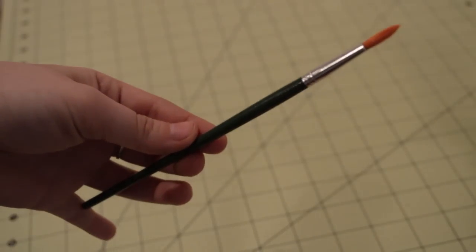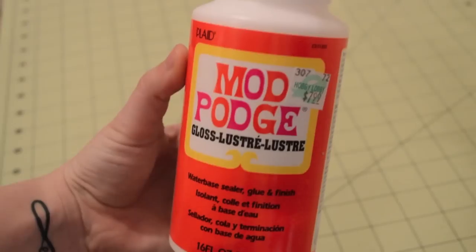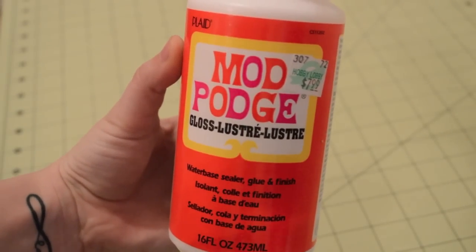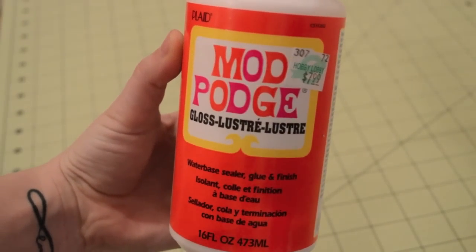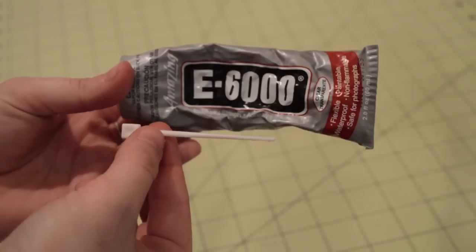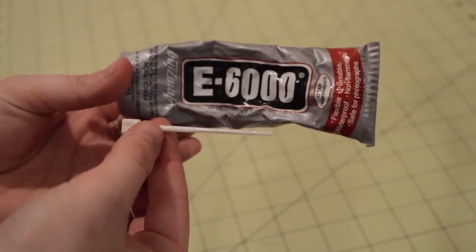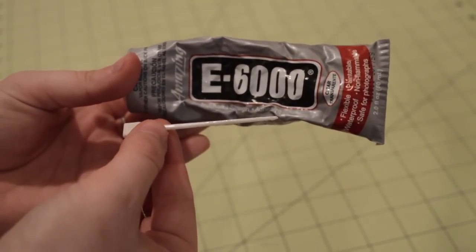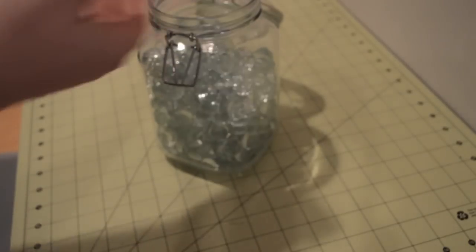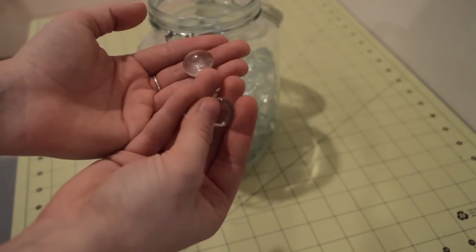Also you'll be needing a paint brush, some Mod Podge, I got this 16 ounce at Hobby Lobby for $7.99, some E6000 glue and some kind of applicator, a glass gem, which also can be found at Hobby Lobby in a two pound bag.